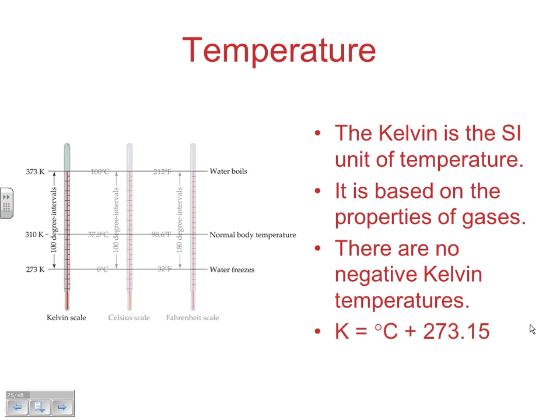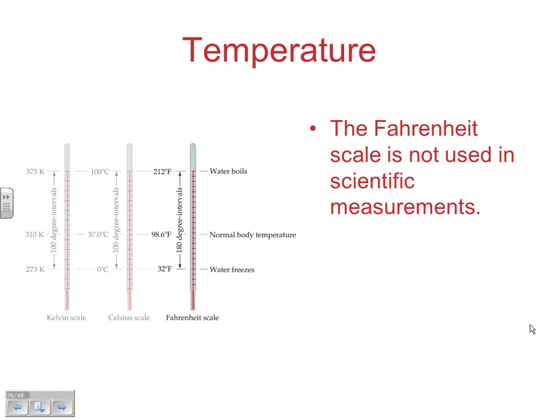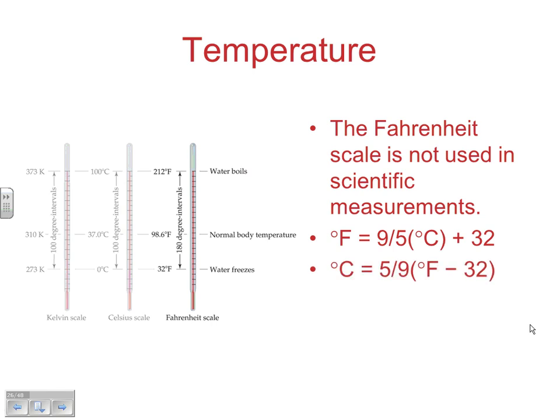To convert Celsius to Kelvin, add 273.15. The Fahrenheit scale is rarely used in AP Chemistry. The conversion is: °F = 1.8 × °C + 32; to go back, subtract 32 and multiply by 5/9. One note: a change of one degree Celsius represents a larger actual temperature change than one degree Fahrenheit, so Fahrenheit is technically slightly more responsive to temperature changes.